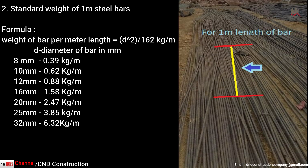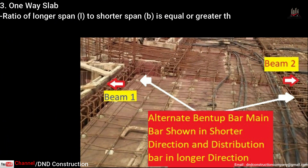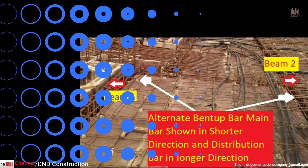The third point is one-way slab. The ratio of longer span to shorter span — if it is greater than or equal to 2, then the slab is known as a one-way slab. Load is transferred in the shorter direction of the slab, where the main reinforcement bar is provided only in the shorter direction, and the longer direction has distribution bars.